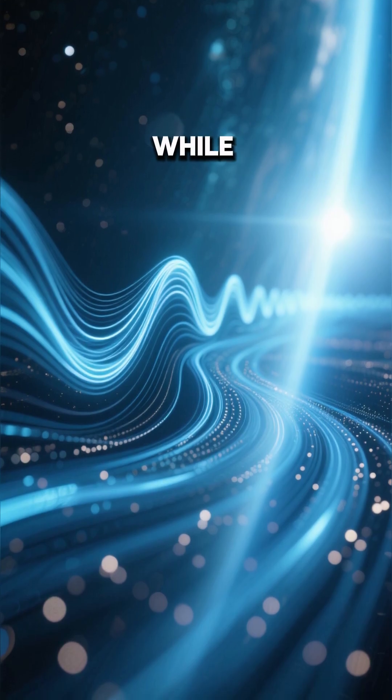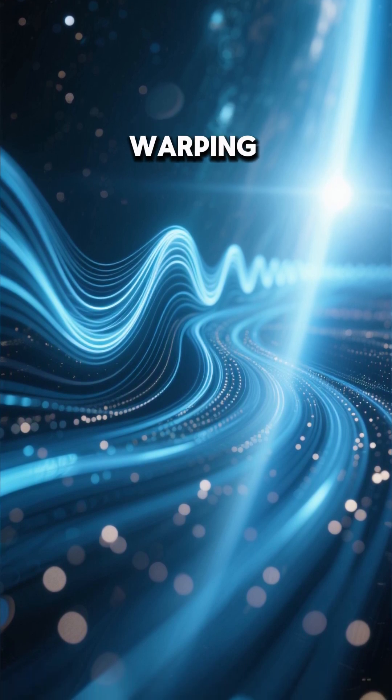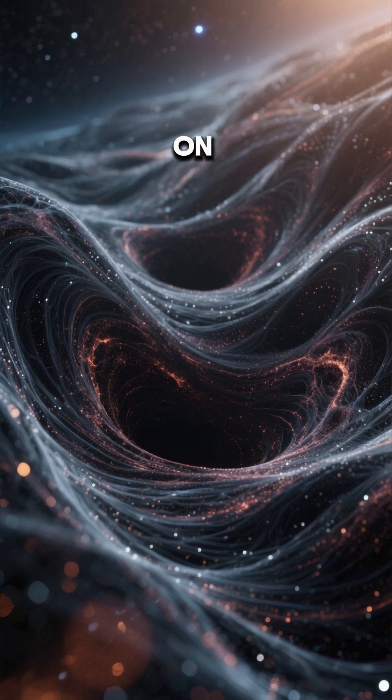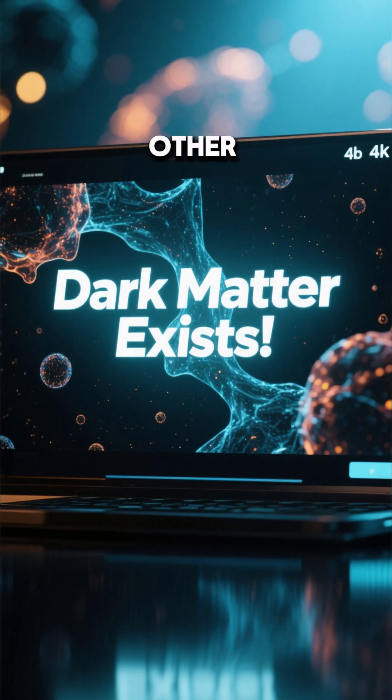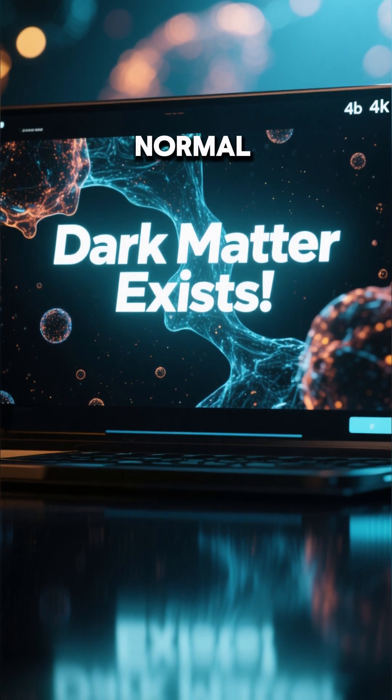Scientists know that because while the galaxies were flying through space, their gravity was warping the space around them. And since dark matter has gravity too, it left its own mark on the fabric of space. In other words, this is proof that dark matter exists independently of normal matter.